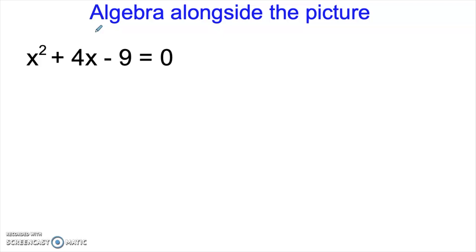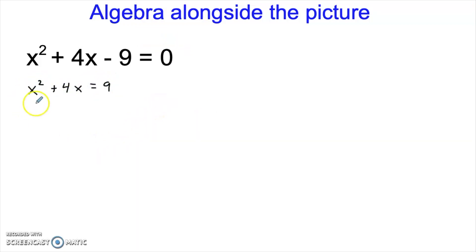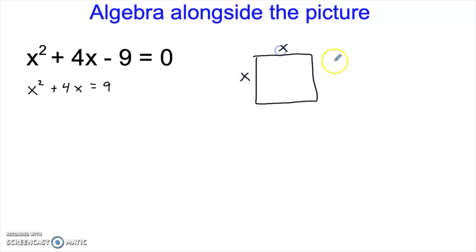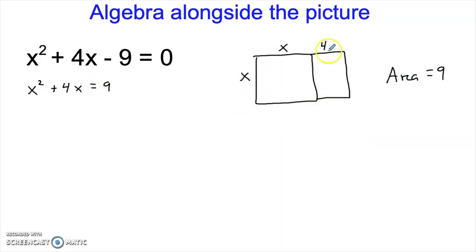We could, of course, try to factor this, although we're not going to be able to find factors of 9 that will give us a 4. So we'll have to resort to something like the quadratic formula. But we can turn this into the exact same problem that we just solved. To begin, I would like to rearrange the terms a little bit. So all I've done is add 9 to both sides, and now I have x squared plus 4x equals 9. I'd like you to notice that this actually describes a picture very much like the one we were just talking about.